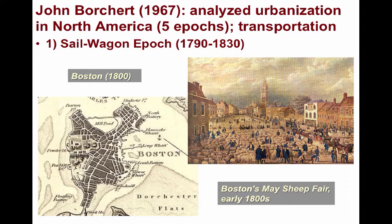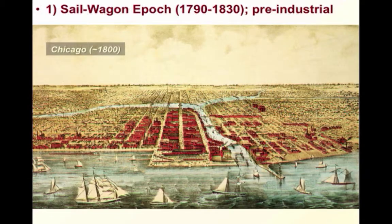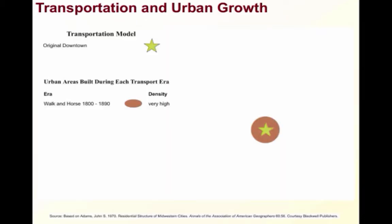The first was the Sail-Wagon Epoch, which began around the start of the United States itself, around 1790 up to 1830. These cities emerged in the pre-industrial era. The movement of people was limited and slow because of the difficulty of overland and waterway transportation. People either traveled on foot, with horses and wagons, or on sailboats. Looking at this graphic, you can see how the central city was quite compact because people had to have close access to the CBD. This was the starting point of what would eventually become the concentric zone model.